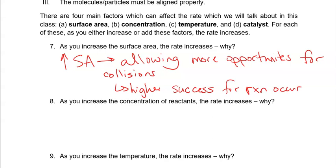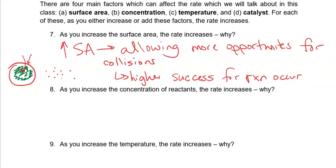By increasing surface area you have more locations where a chemical reaction can actually occur. With one really big particle, all the material inside has no way to be collided with — only the outside surface is active. So a larger surface area means more opportunities for collisions and a higher success rate for a reaction occurring.